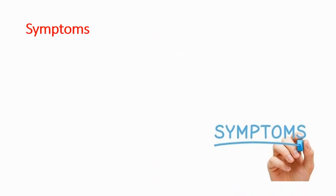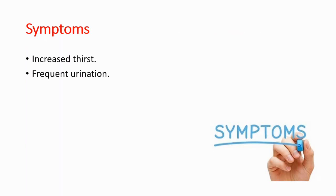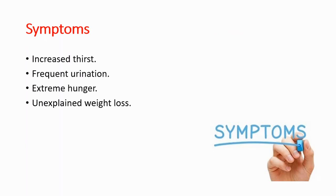Diabetes symptoms include increased thirst, frequent urination, extreme hunger, unexplained weight loss, and blurred vision. If you have these symptoms, please check your hemoglobin A1C levels.